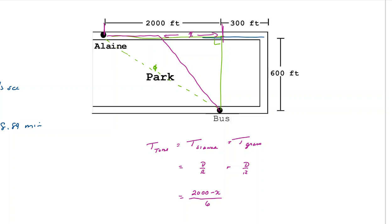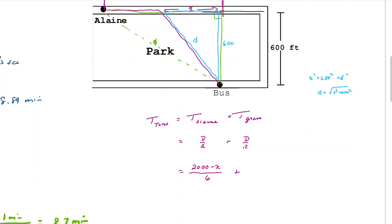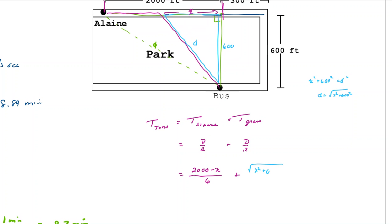Her time on the sidewalk is (2,000 − x) / 6. Her distance across the grass is the hypotenuse of a right triangle with legs x and 600, so that distance is √(x² + 600²). Her time on the grass is √(x² + 600²) / 4. So total time T = (2,000 − x)/6 + √(x² + 600²)/4.